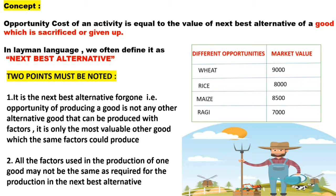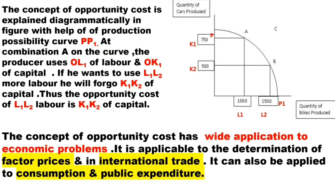The second point to be noted is that all the factors used in the production of one good may not be the same as required for the production of the next best alternative. The factors used for growing wheat, for instance, may be different from those required for maize. So let me explain this with the help of a diagram.